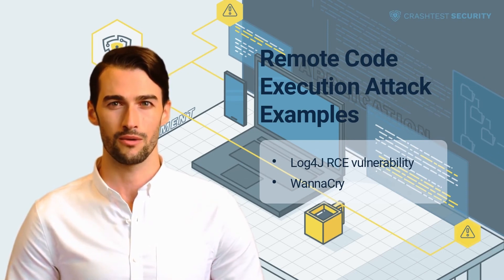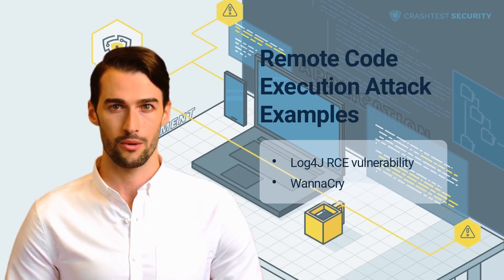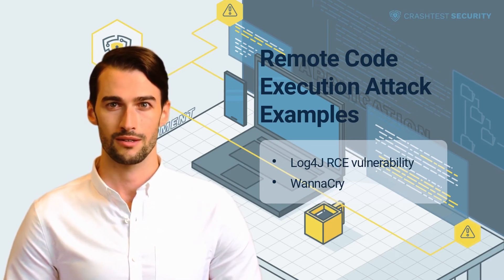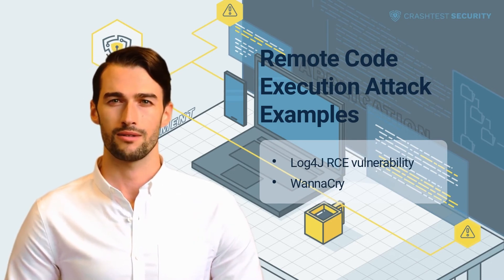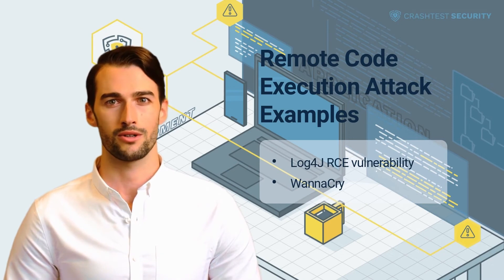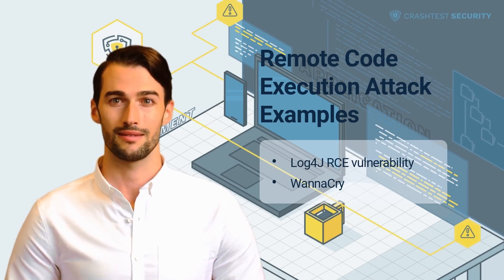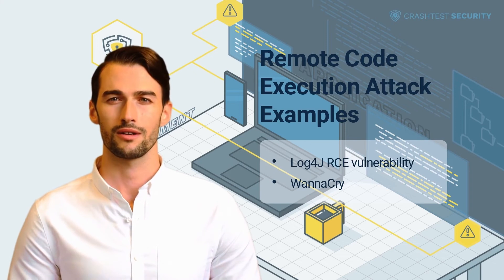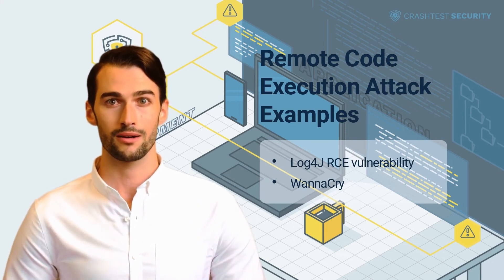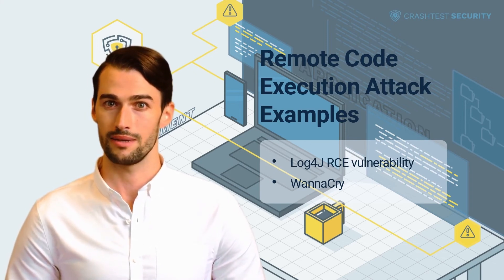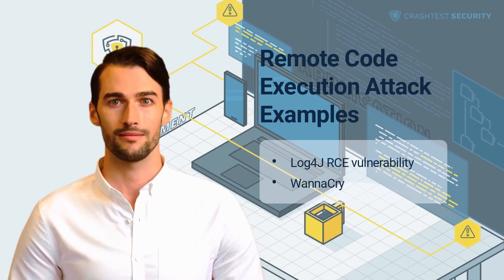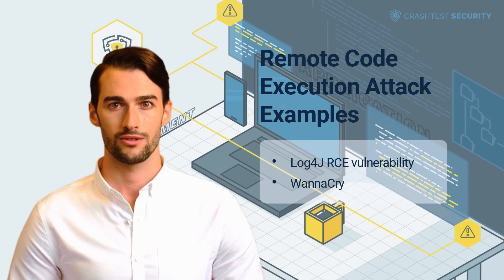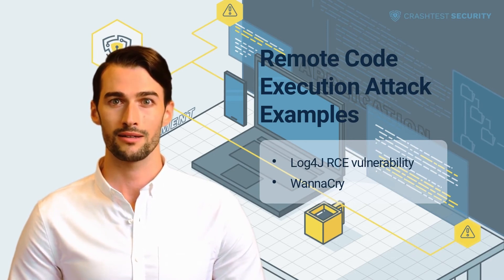WannaCry is a ransomware cryptoworm attack that used an RCE exploit called EternalBlue, which in turn allowed it to deploy the DoublePulsar tool to install and execute itself. The attack targeted Microsoft Windows systems. After installation, the worm encrypts data, and attackers demand ransom. EternalBlue targeted a security vulnerability in Microsoft's Server Message Block, SMB protocol. This vulnerability allowed attackers to inject and remotely execute code. These are only two of the most famous RCE vulnerabilities and their enabled attacks.